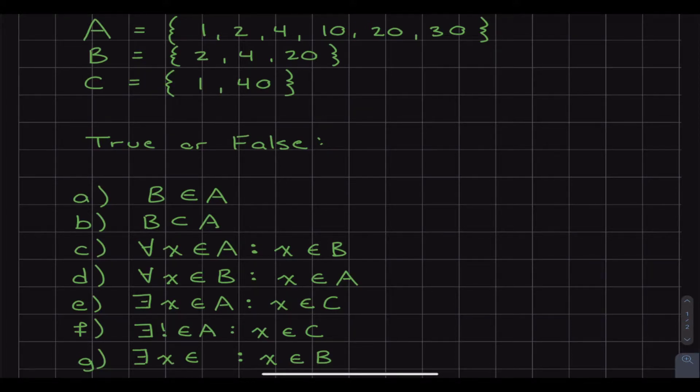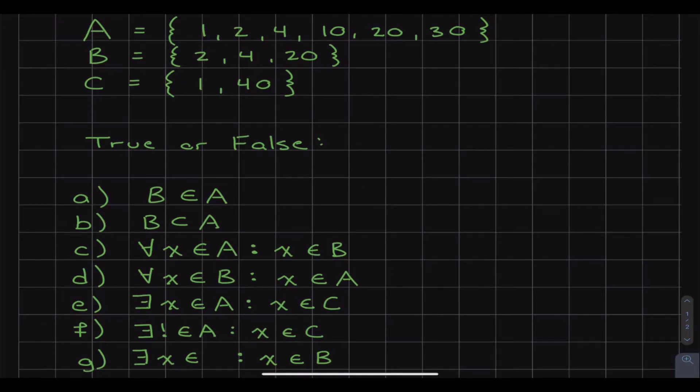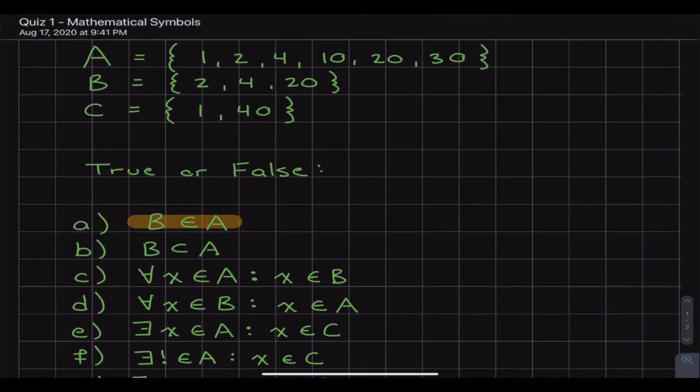So looking at number a, the first one says is B an element of A? So that little, looks like a little E in the middle, that means element of A. And if we look up here, the answer is going to be no, because an element is basically a number and B itself is not a number, B is a set of numbers.